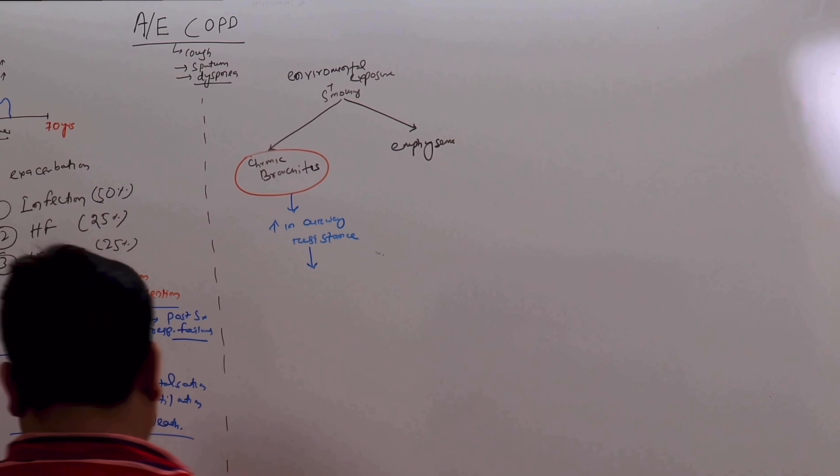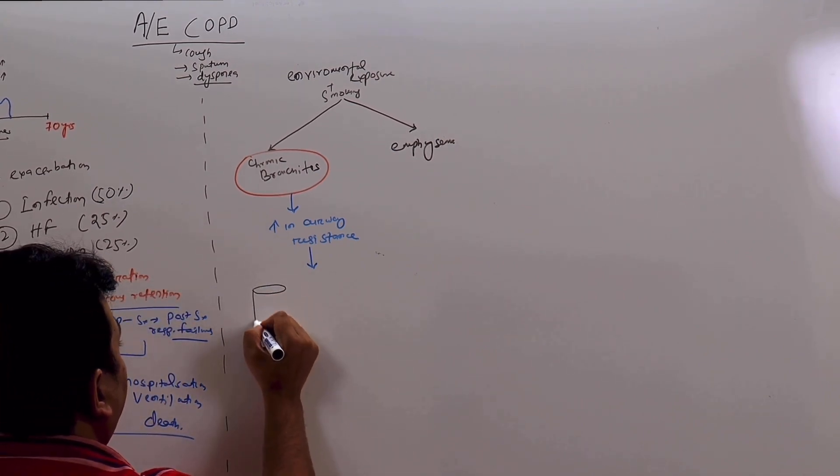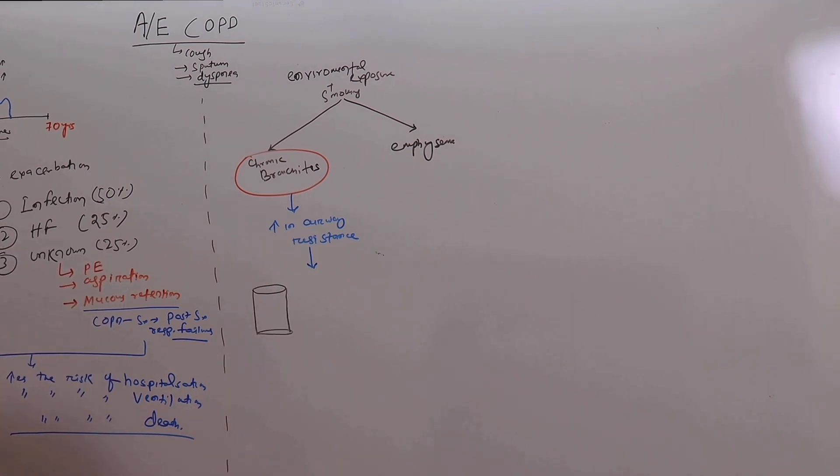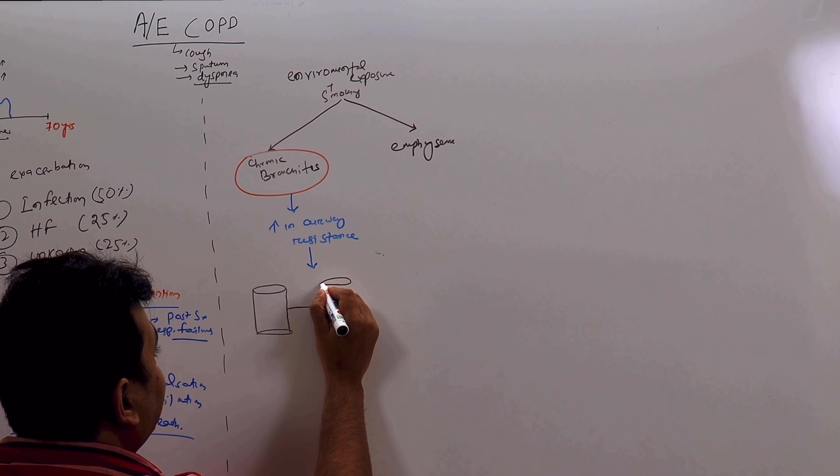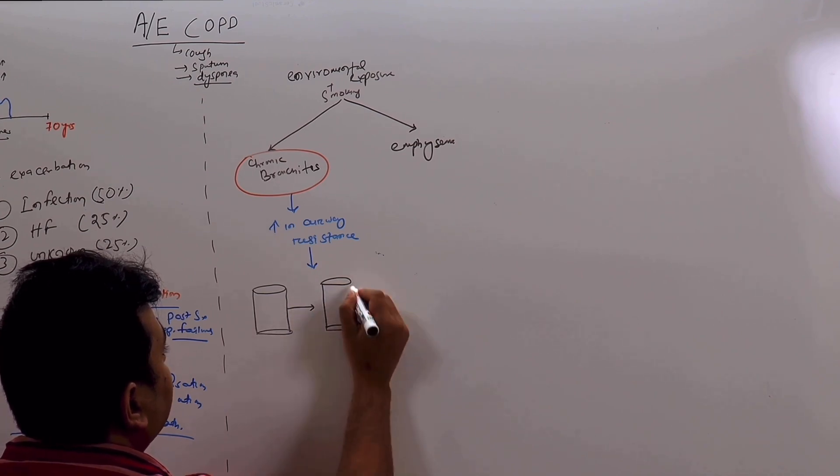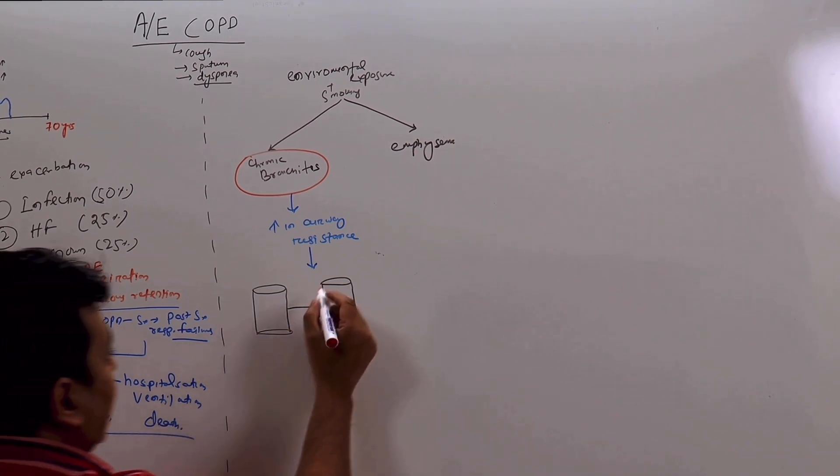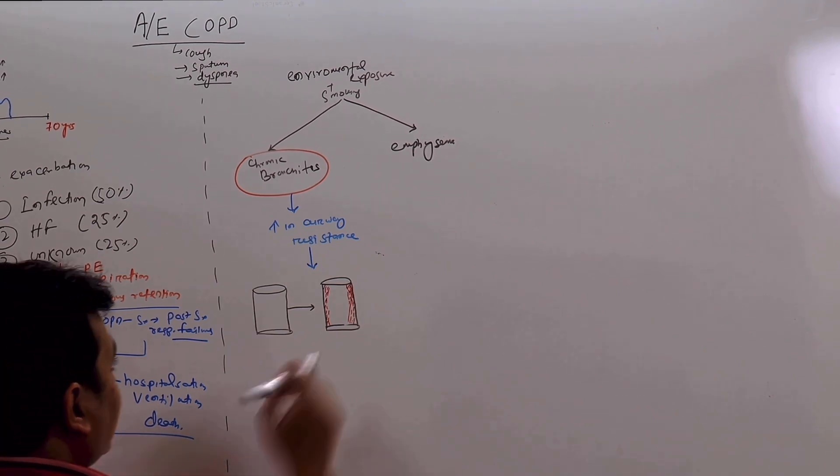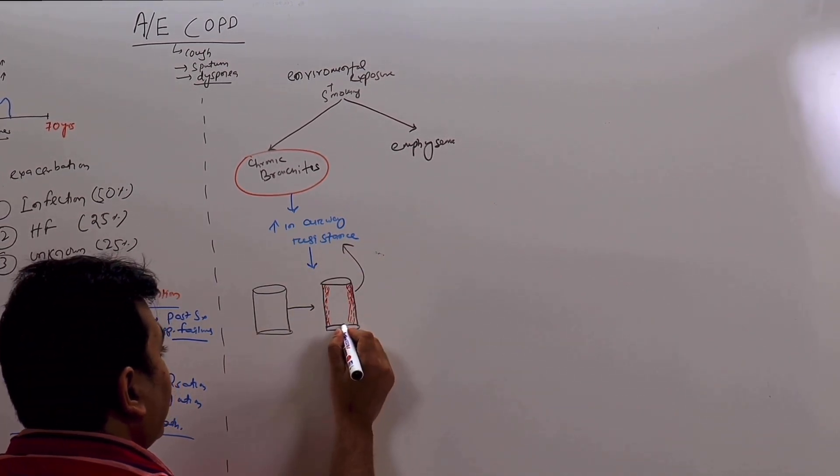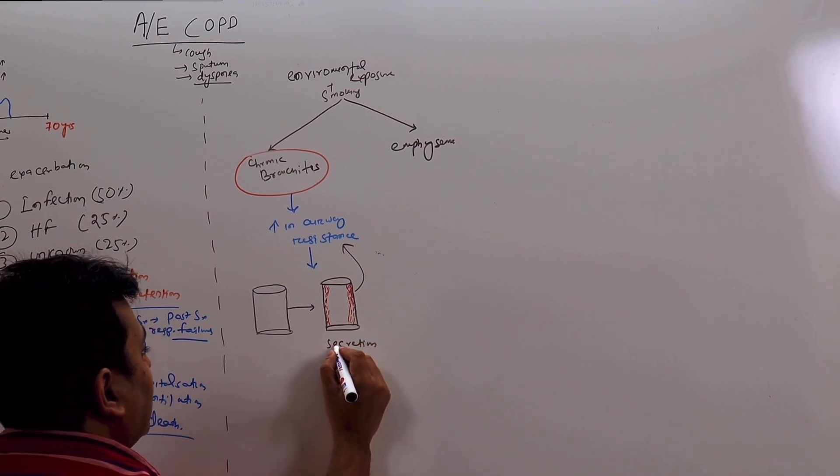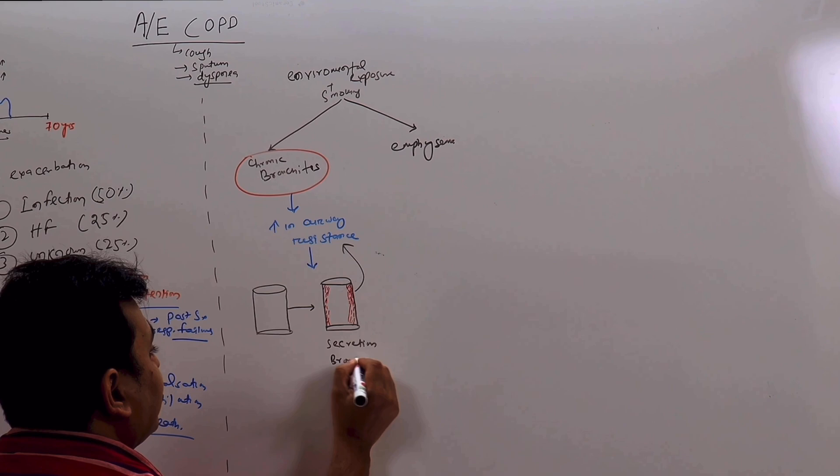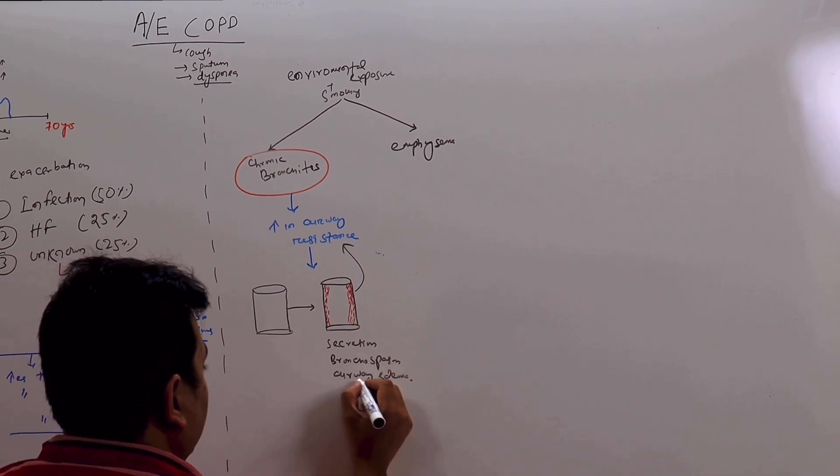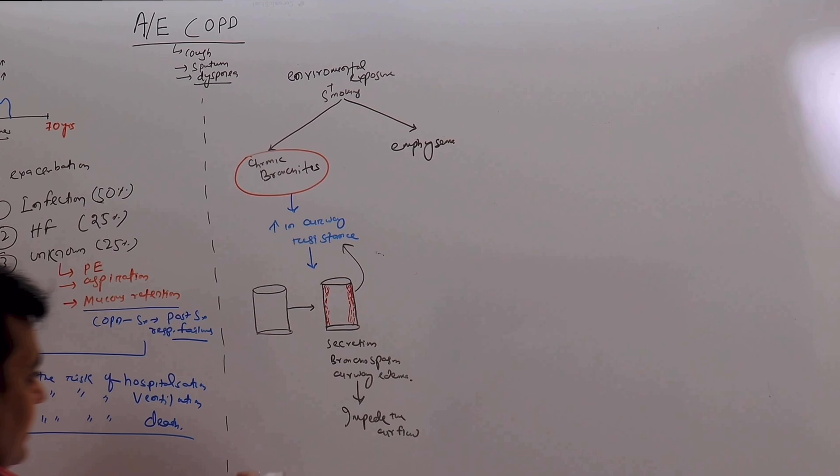For example, let us say this is the airway. Now in chronic bronchitis what happens - this airway, the caliber remains the same but because of secretion, edema, bronchospasm, the thickness of the airway increases. So overall the airway becomes narrowed and this increases the resistance, airway resistance. So what are the problems here? There is secretion, there is bronchospasm, there is airway edema. So all these things what they will do, they will impede the air flow. Remember this thing, this impedes the air flow.